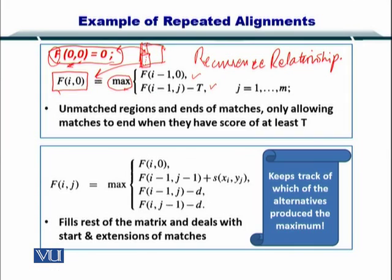You have to apply a maximal operator here at both of these values. Just to remind you, in case of the global alignment we initialize the first column by minus i multiplied by the gap penalty. In case of the local alignments we initialize the first column by zeros, but in this case for the repeated sequence alignment we are initializing the first column by taking the maximum value.